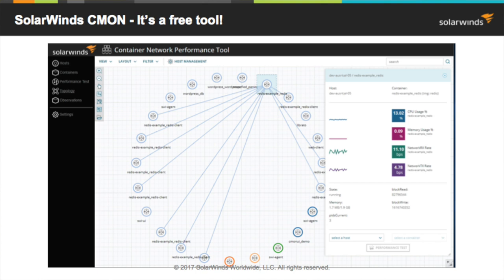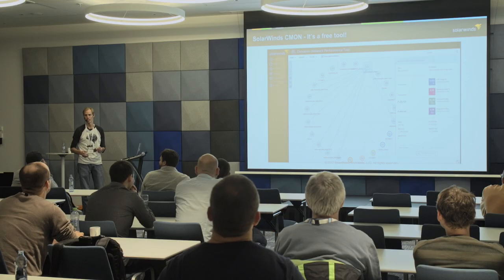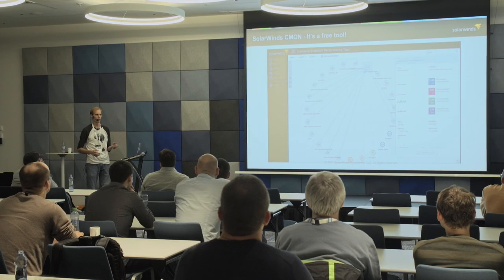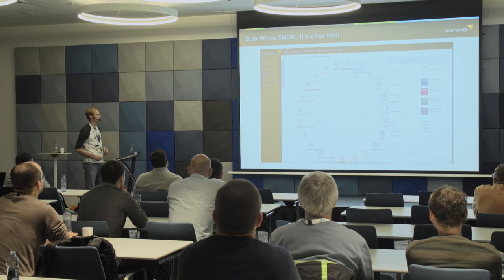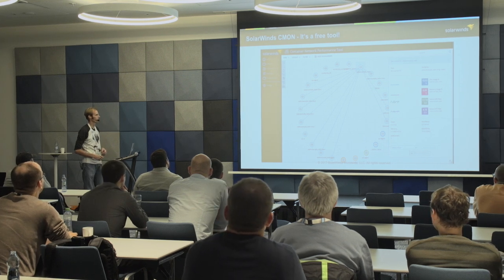We call it the Container Network Performance Tool, or CMON for short — which I always think of in a Jamaican accent. Anybody familiar with Jamaican accents? I have a horrible Jamaican accent, I'm sorry — but that's what I think of every time I see CMON. So there you see some containers up there.